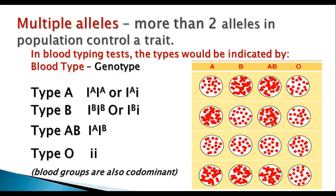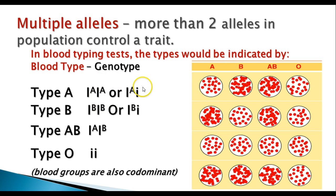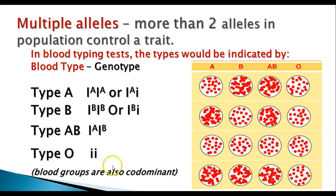In some cases there are multiple alleles — more than two alleles in a population controlling a trait. An example is human blood type. Blood type has four phenotypes: A, B, AB, and O. Two A alleles or an A and O allele gives type A blood. Two B alleles or a B and O allele gives type B. Both A and B alleles gives type AB. Two recessive alleles gives type O. Type O is recessive to both A and B, but A and B are codominant — this is a case of both multiple alleles and codominance.